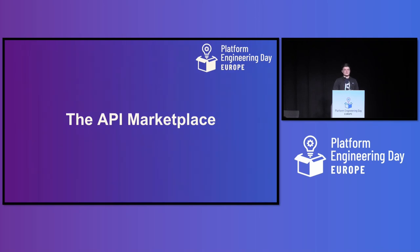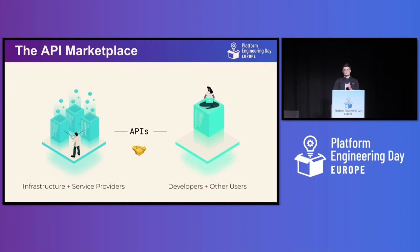Now we've basically laid the groundwork for KCP and its differences to other solutions for using the Kubernetes API in platform engineering. I want to delve into managing APIs with KCP. I like to call this the API marketplace. In platform engineering, we have two parties that we want to connect as platform engineers: the infrastructure and service providers — whatever you want to provide to your users — and developers and other users. And the way to connect these two sides at scale is our APIs. That's what platform engineering basically does.